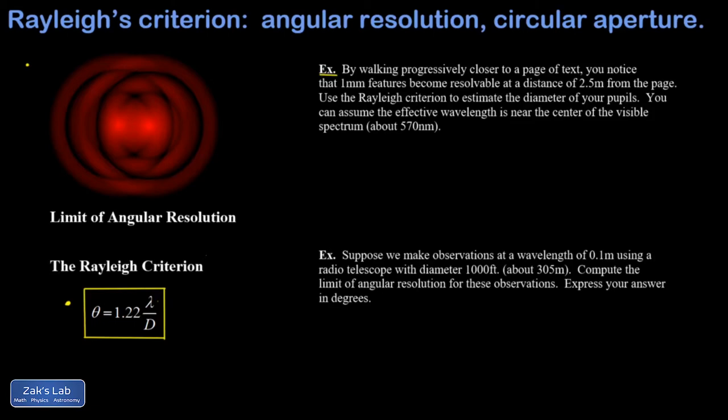In the first example, we're told we're walking progressively closer to a page of text. If you're far enough away, you won't be able to resolve any individual letters because the angular separation between features on those letters is below the minimum resolvable angle. As you get closer, the angular size of the letters gets bigger, and at some point you cross over the minimum resolvable angle and you'll begin to see features on the letters.